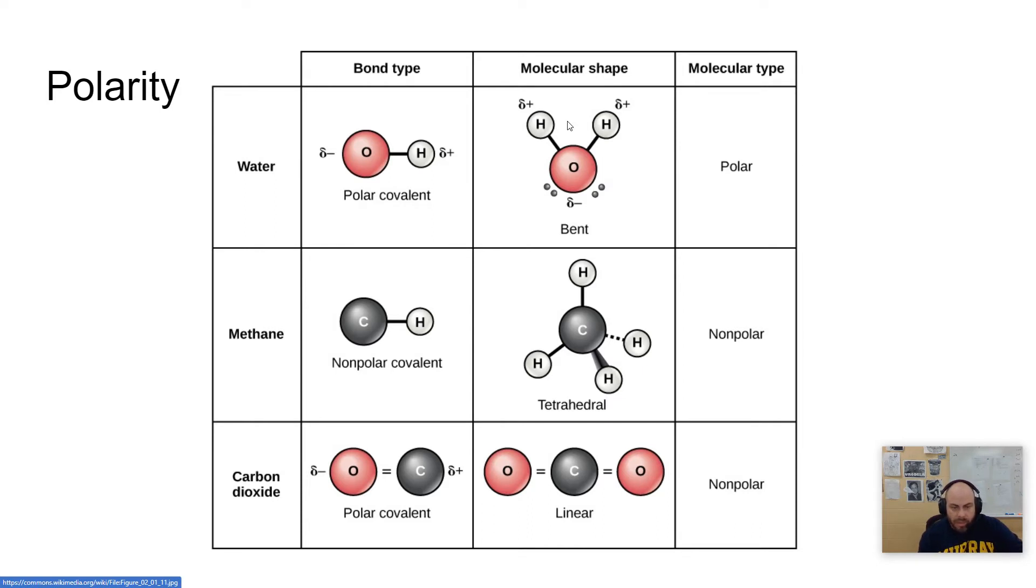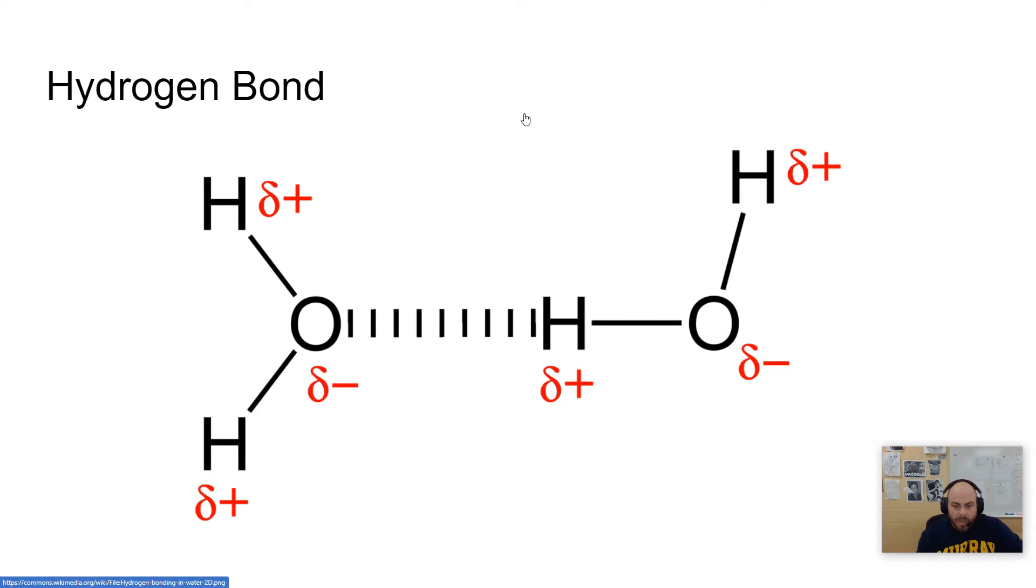Because of water's polarity, it is able to form bonds with itself. And so if you have another water molecule, imagine this negative here is going to be attracted to the positive of the other water molecule. These bonds are called hydrogen bonds.